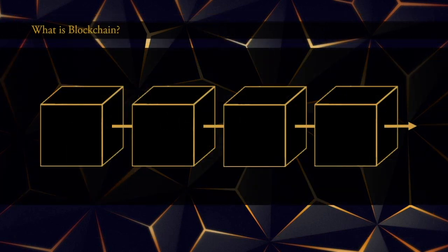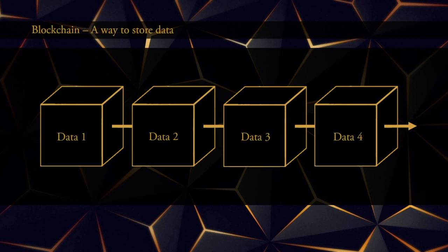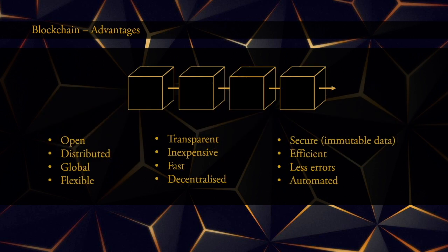So let's get started talking about what blockchain is. The very short answer is simply that a blockchain is a way to store data. This is done by storing the data into blocks and then linking them together into a blockchain. Here's a list of the advantages of using blockchain — I will be mentioning all of this again at the end of the presentation, where we actually have a better understanding of what blockchain is.